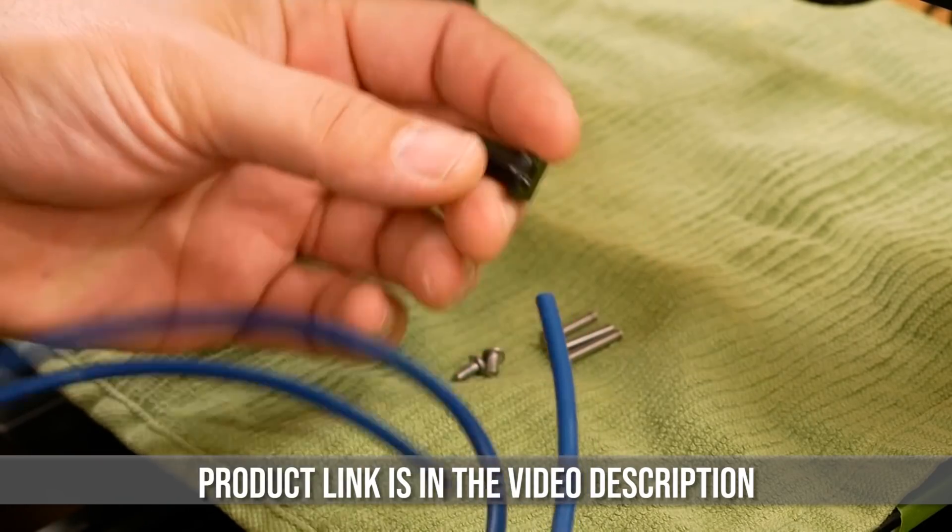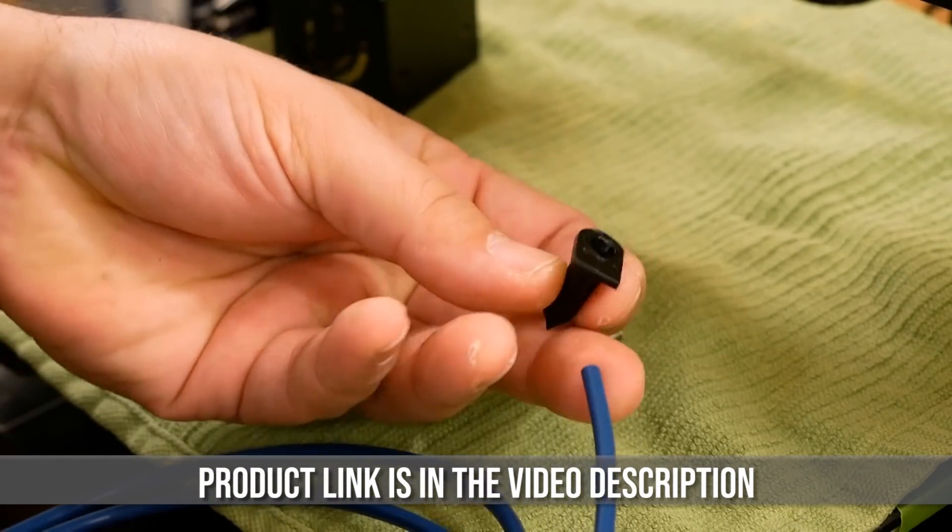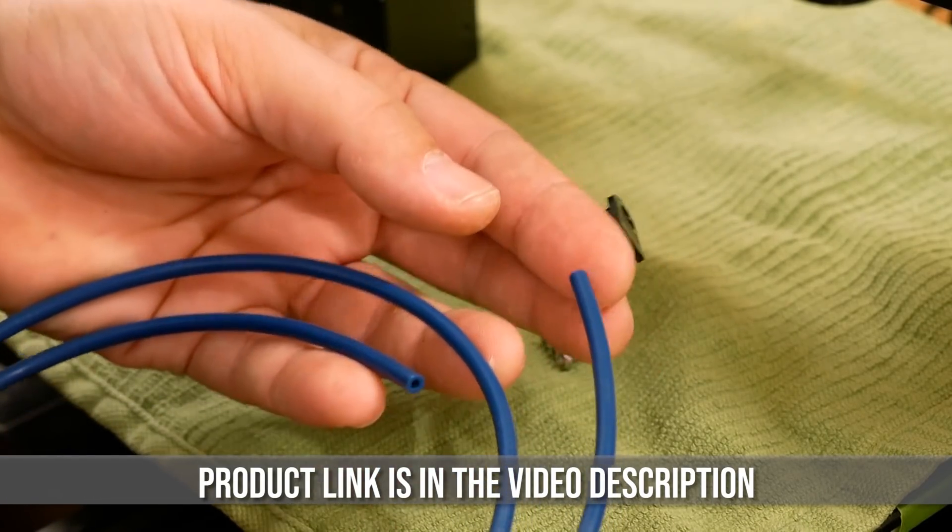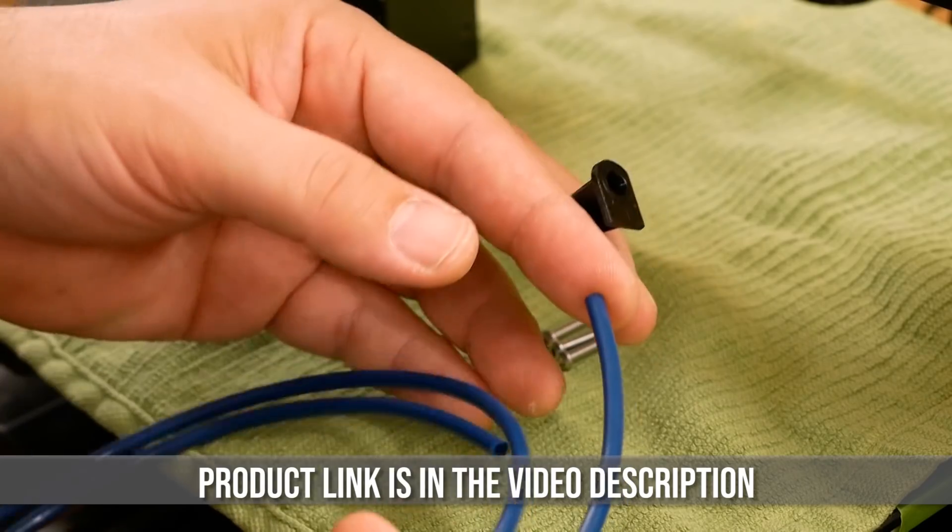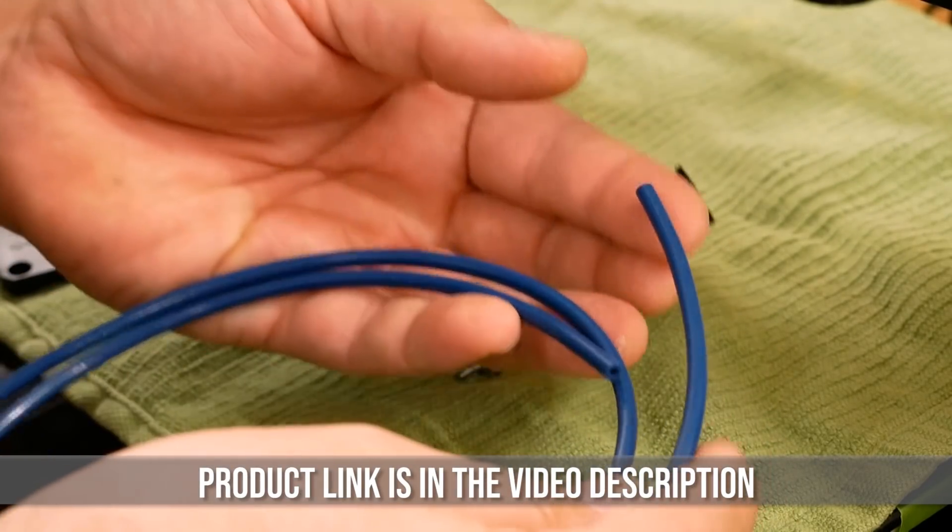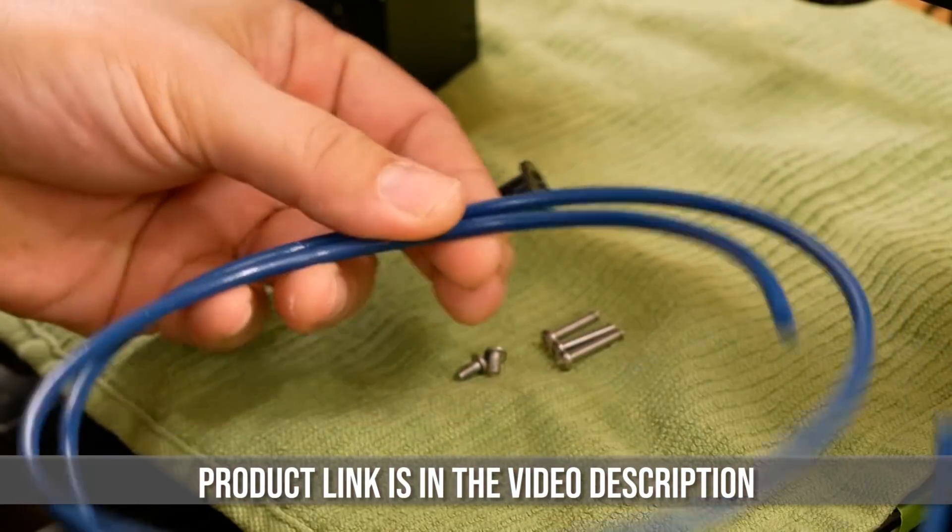Now this here is the stuff that you're going to want to insert into this little plastic piece and it's called Capricorn tubing. You can get generic PTFE tubing, but this is supposed to be like the best. I don't know, it's about 10 bucks for this length and I just figured that was a fair deal.